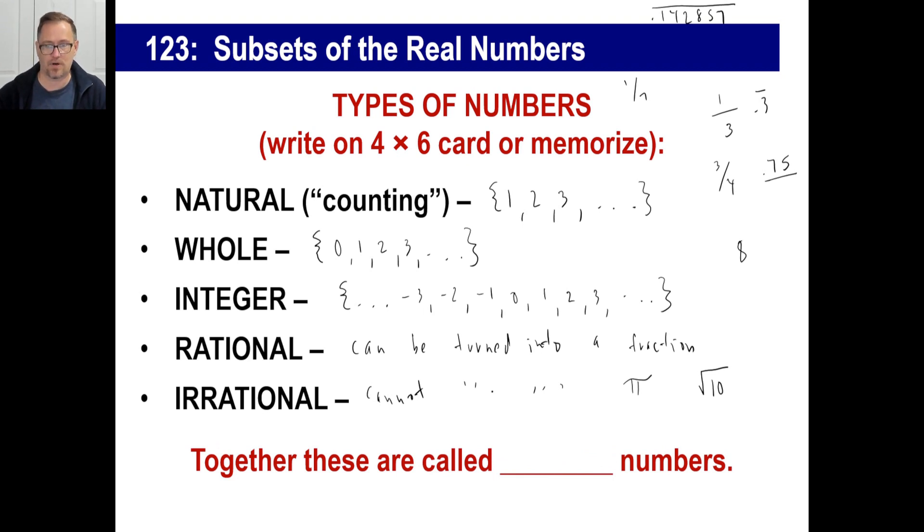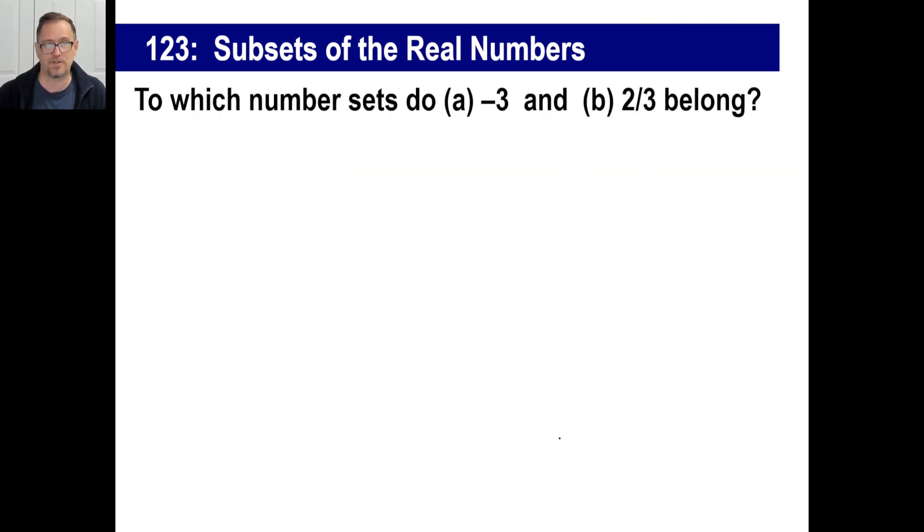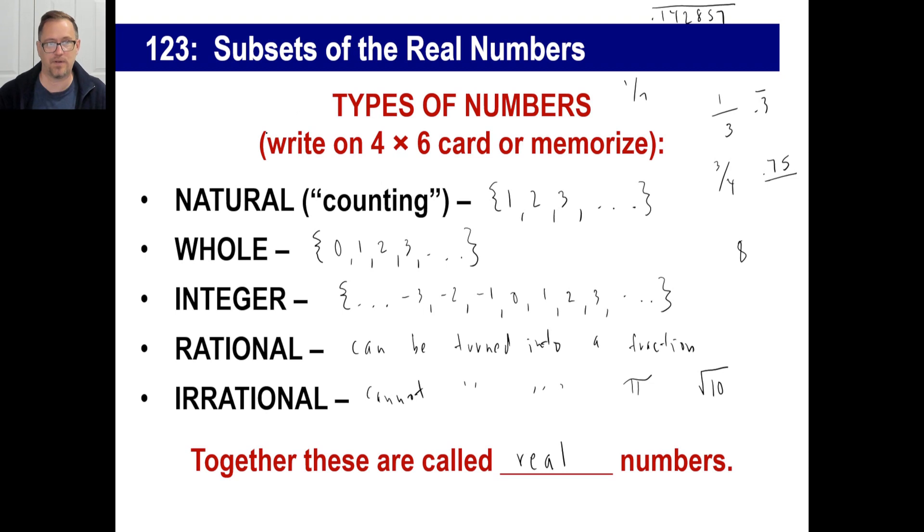All together, these are called real numbers. Real numbers are numbers that may be found on a number line somewhere. And we'll talk more about imaginary numbers. There is such a thing. We're going to do imaginary numbers at the end of next year, I believe. So they will ask you questions like this. To which number sets do negative three and two-thirds belong? So let's go back and we'll try negative three first.